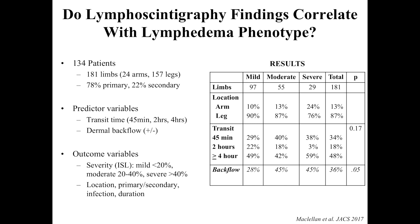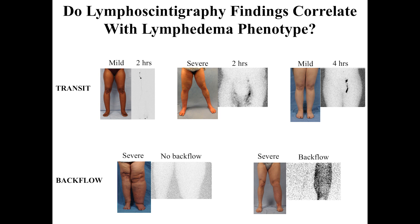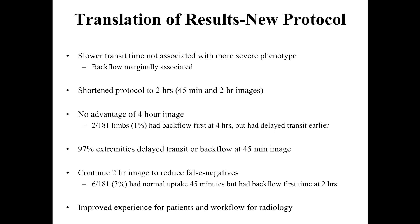We did find a slight association with dermal backflow. Based on ISL descriptions of severity — mild (less than 20% difference between extremities), moderate (20–40%), and severe (over 40%) — 28% of mild patients had backflow, with increased rates in moderate to severe, reaching borderline significance. Here are examples: a patient with severe lymphedema showing uptake at two hours; someone with very mild lymphedema showing nothing at four hours; a patient with severe lymphedema but no dermal backflow; and a less severe patient with significant backflow. So we didn't find a significant correlation between transit time and severity.